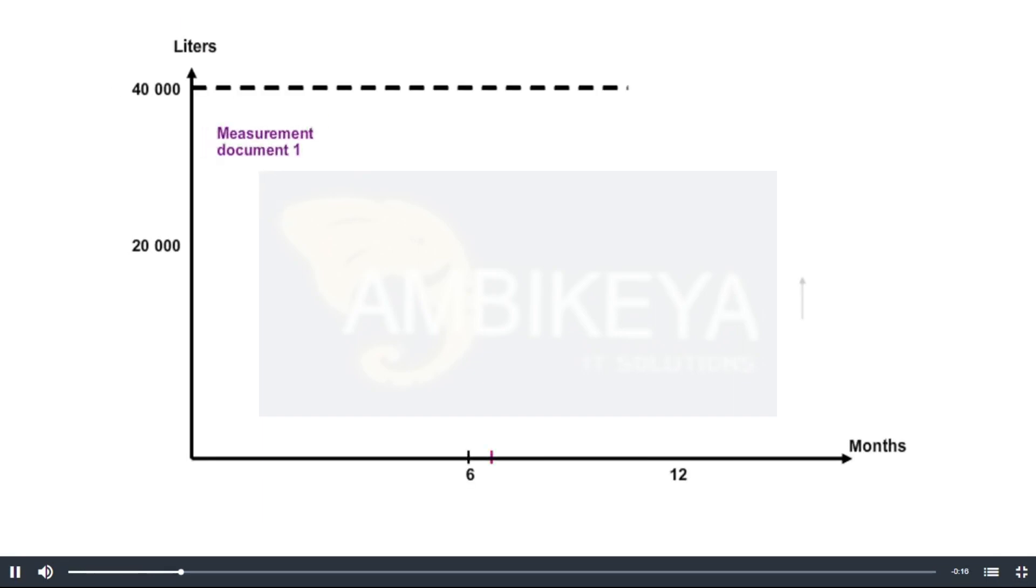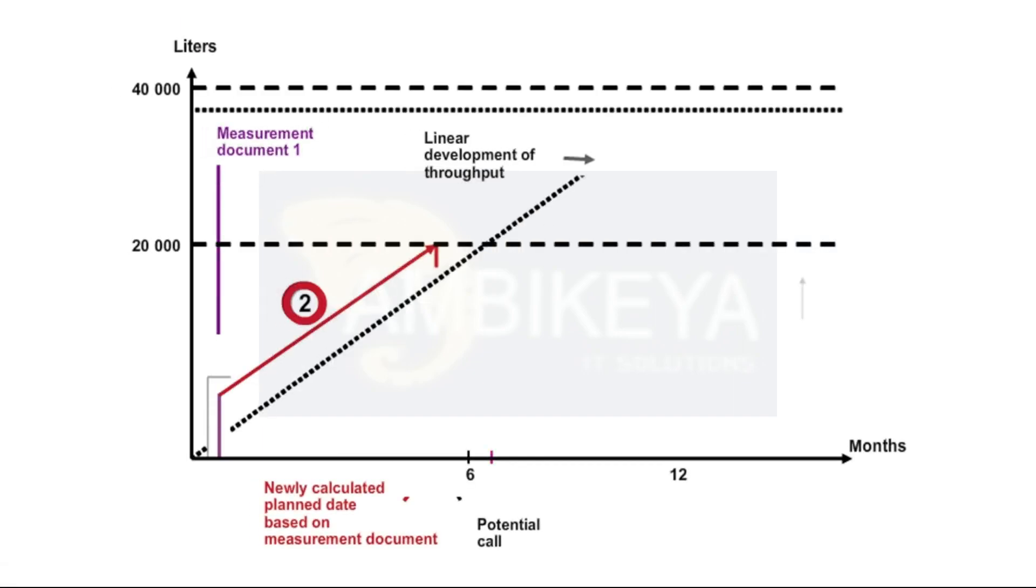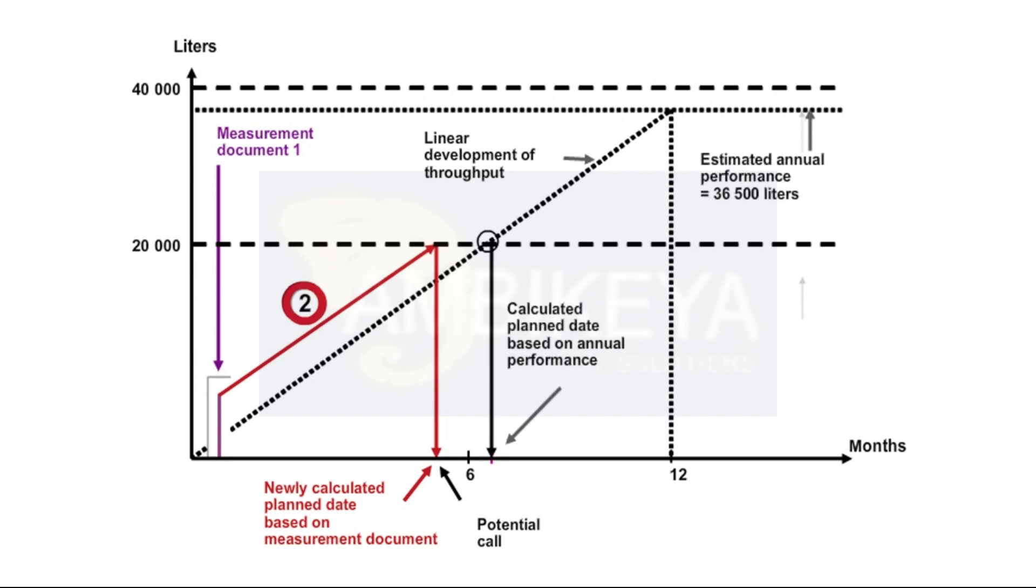If a measurement document is entered, the planned date is thereby recalculated. In other words, the planned dates are controlled directly by the measurement documents entered. This means to obtain a planned date which exactly reflects the performance throughput, measurement documents must be regularly entered.